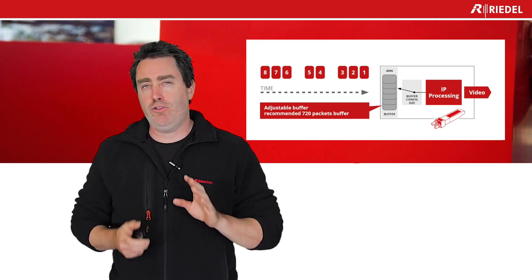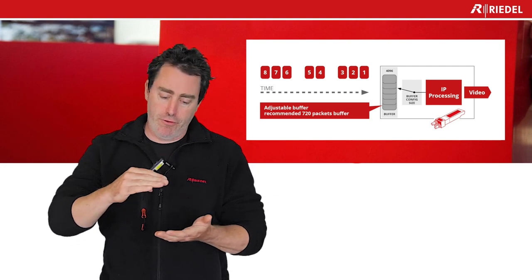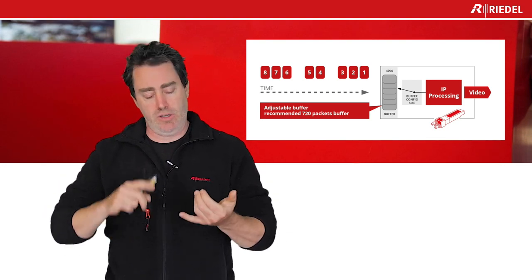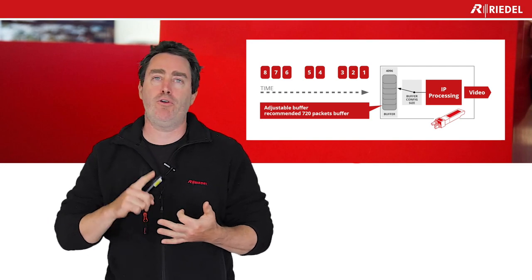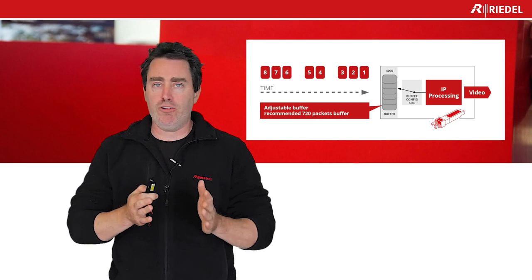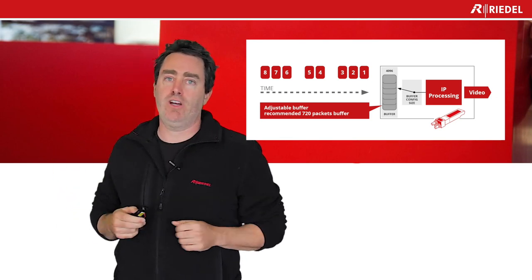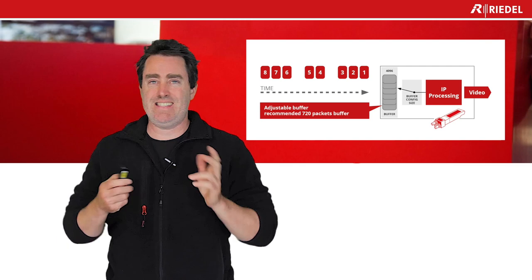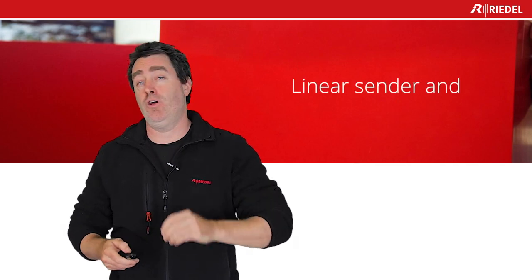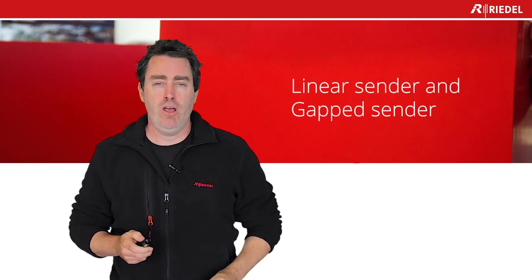You also have to be aware that each buffer, or each flavor or essence, needs its own buffer. So you need a video buffer, an audio buffer, and an ancillary buffer. After that, we have to put them all together to make sure we have a constant flow. This summarizes the narrow and the wide, but there's also one more variable you have to know on top of that — the linear sender and the gapped sender.